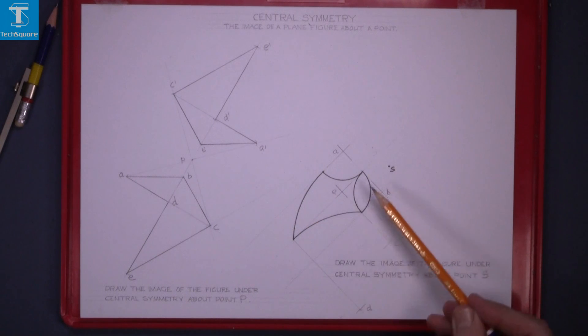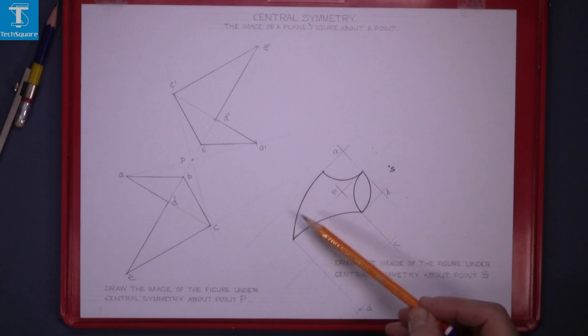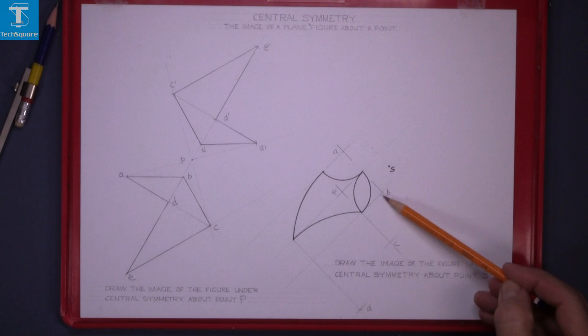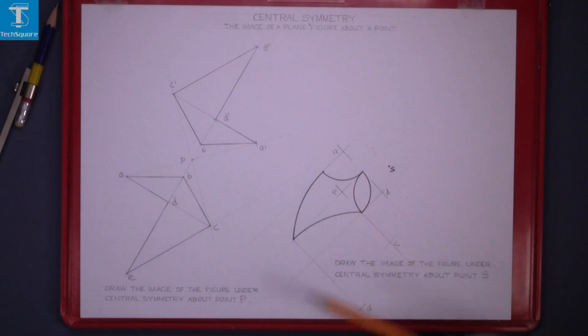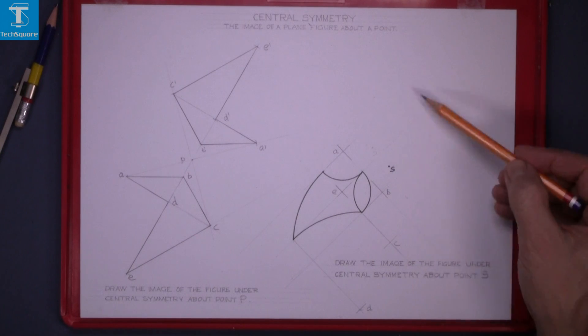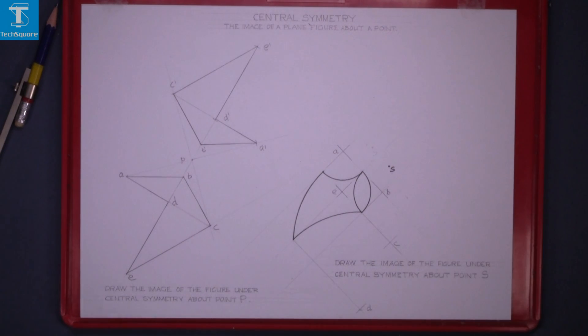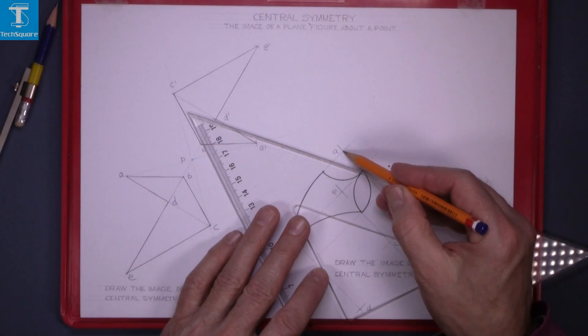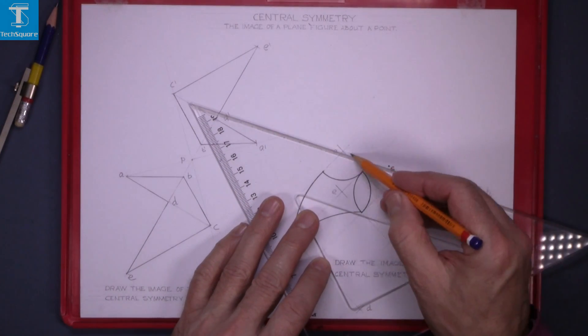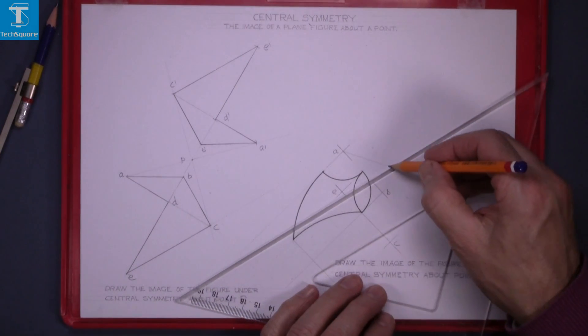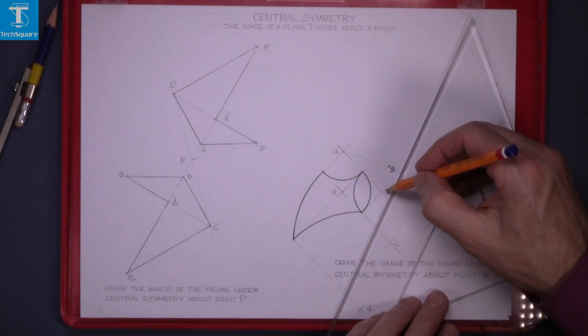This figure is based on circles, and the centers are A, B, C, D, and E. Draw the image of the figure under central symmetry about point S. In this case we work from the centers. We draw the center through point S, and it is same with each of the centers.